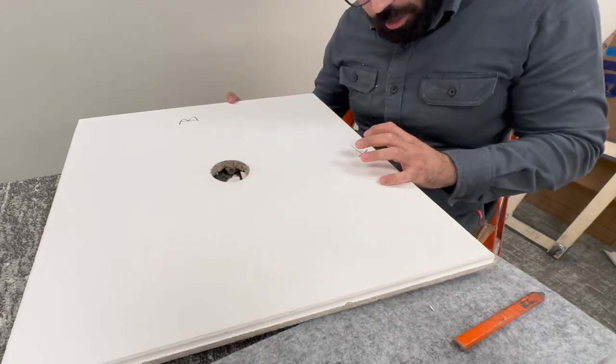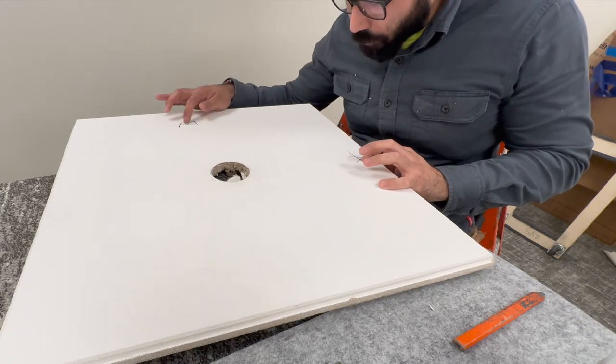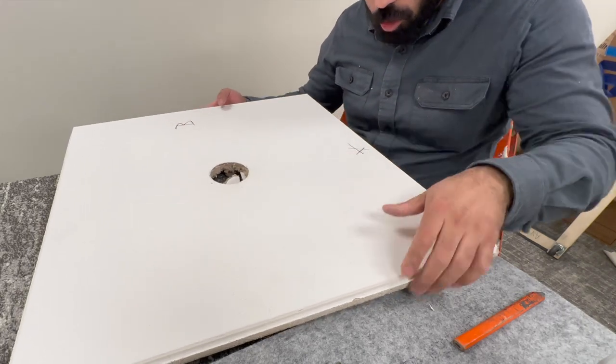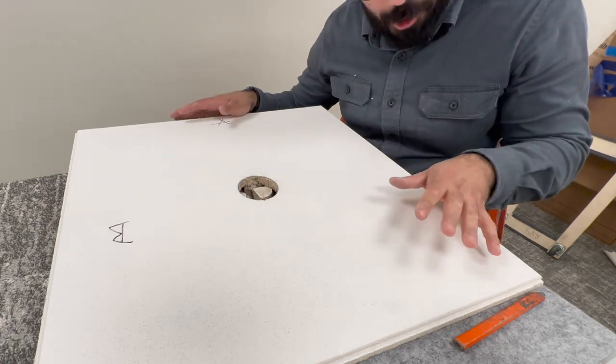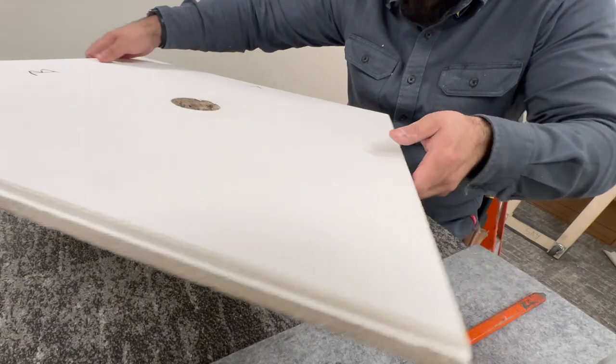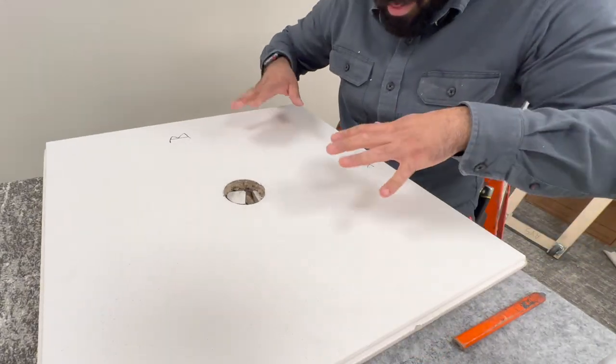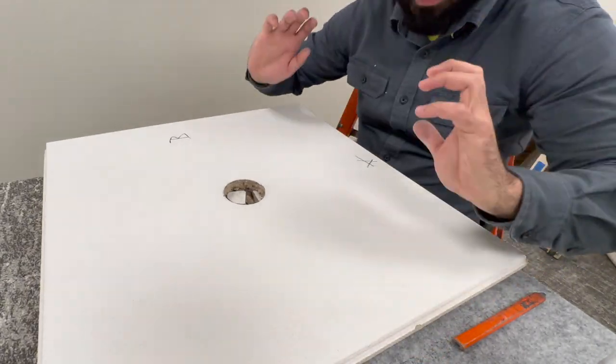When you're doing this and you don't have the mark like A and B, make sure you don't confuse this, because moving it like this, that's it, you lost the location. So make sure you always keep it in the angle that you're gonna flip it and put it in.